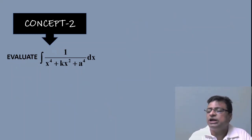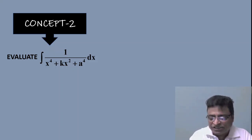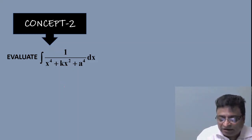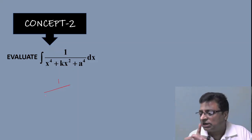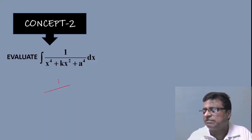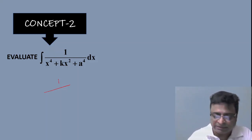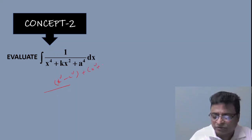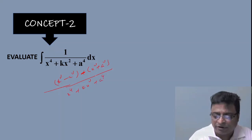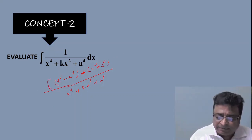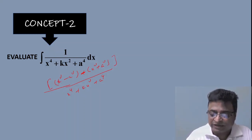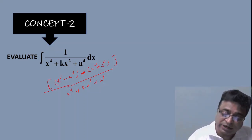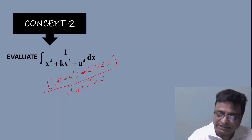Concept Number 2: here we convert an unknown integrand into a known one. The idea is to write the numerator conveniently as (x² − a²) + (x² + a²), or as (x² + a²) − (x² − a²), over the denominator x⁴ + kx² + a⁴. This manipulation allows us to separate the integral and reduce it to Concept 1 forms.